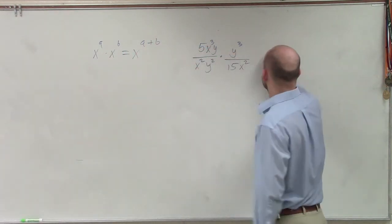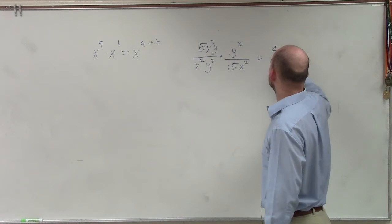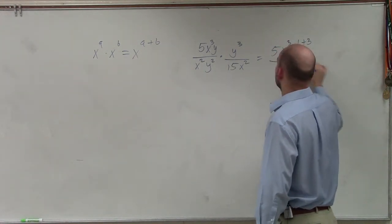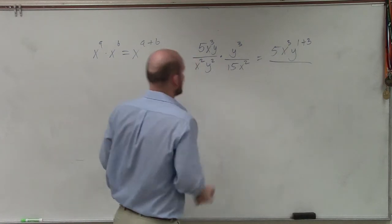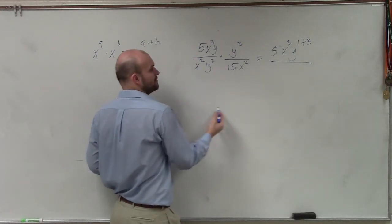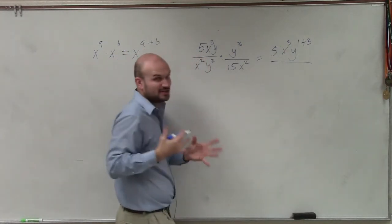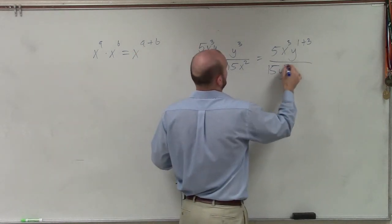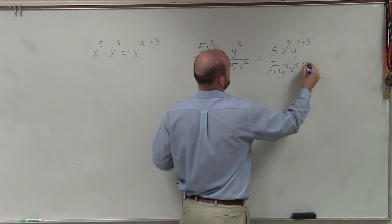So therefore, by multiplying these across, what I'm going to have is 5x cubed y to the 1 plus 3. Over here, my denominator, I can only multiply my x squared and my x squared. Those are the only terms I'm actually going to be able to combine with multiplication. So I have 15y squared x to the 2 plus 2.